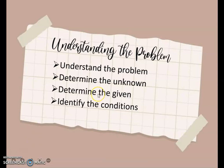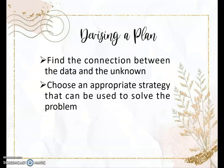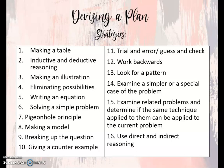Next is devising a plan. In devising a plan, find the connection between the data and the unknown. For example, in our $5 to peso conversion, find if they have a connection. Then choose an appropriate strategy to solve the problem. Here are some strategies for devising a plan: making a table, which we will discuss later; inductive and deductive reasoning; making an illustration; eliminating possibilities; and others. There are many strategies we can use in solving a problem.